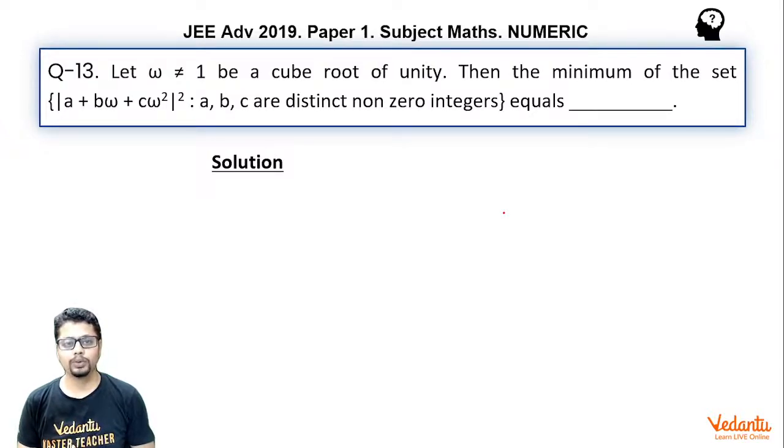Let ω ≠ 1 be a cube root of unity. Then the minimum of the set having elements |a + bω + cω²|² where a, b, c are distinct non-zero integers equals.